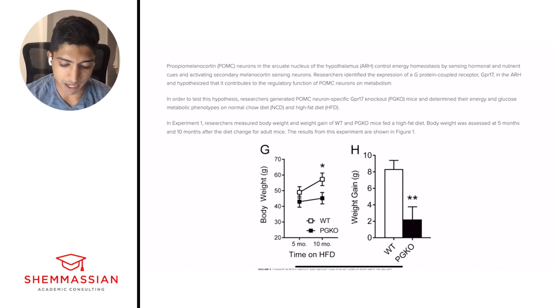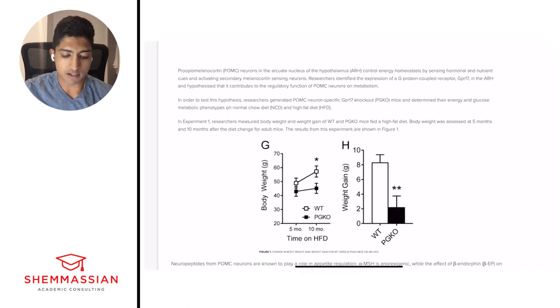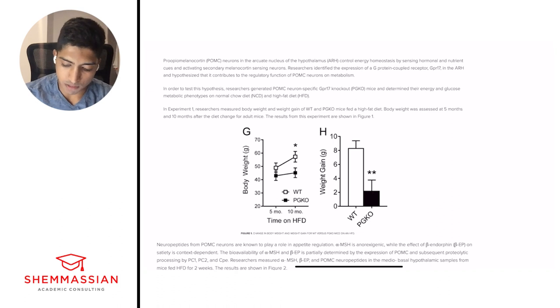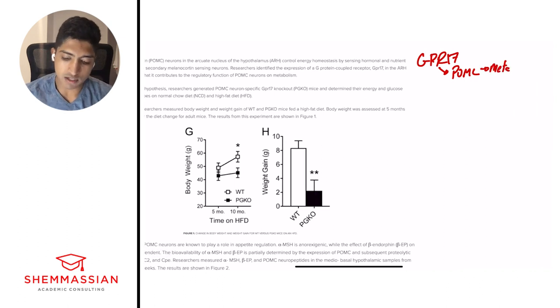POMC neurons in the arcuate nucleus of the hypothalamus ARH control energy homeostasis by sensing hormonal and nutrient cues and activating secondary melanocortin sensing neurons. Researchers identified the expression of a G protein coupled receptor GPR17 and the ARH and hypothesized that it contributes to the regulatory function of POMC neurons on metabolism. So the question I ask myself every single time is, what's happening? A basic understanding, nothing too detail-oriented. The big picture understanding of exactly what's going on. And here I see we have a GPCR, GPR17, and that is interacting with the POMC neurons, and that's interacting with metabolism. We have this mechanism that it's talking about. And this is the big picture understanding. We're not focusing on every detail. Draw symbols, use abbreviation, whatever helps you understand the big picture idea.